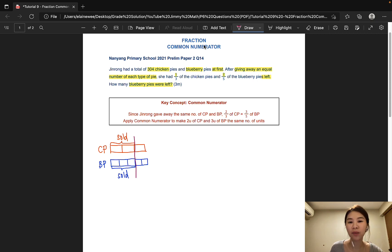So how can we use common numerator instead? All we need to do is write the two sets of fractions that are equal to one another. So two-third of chicken pies is equal to three-fifth of blueberry pies.